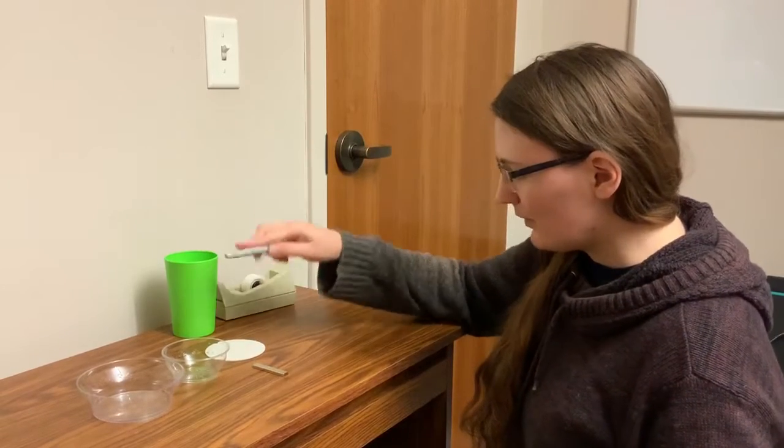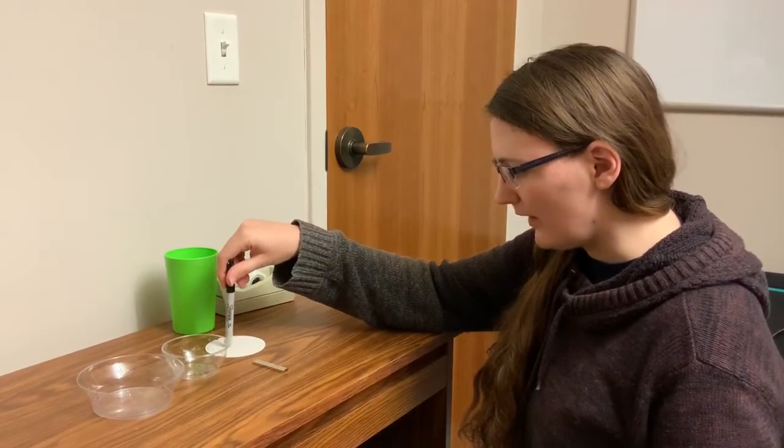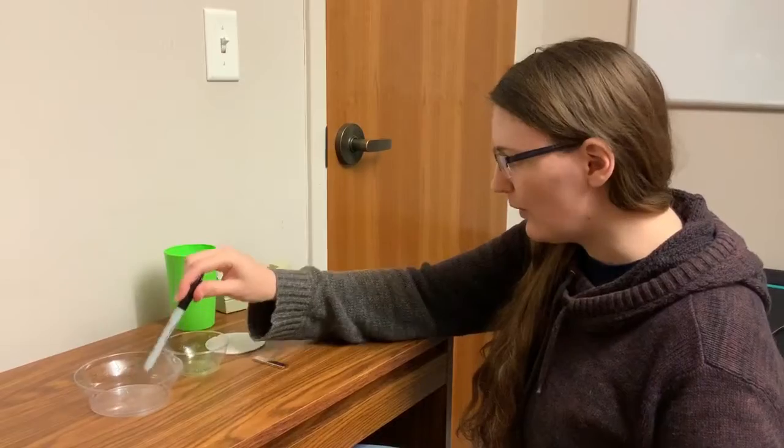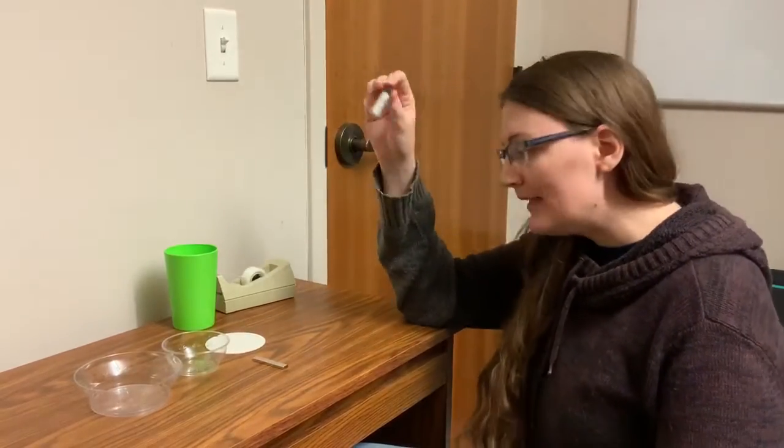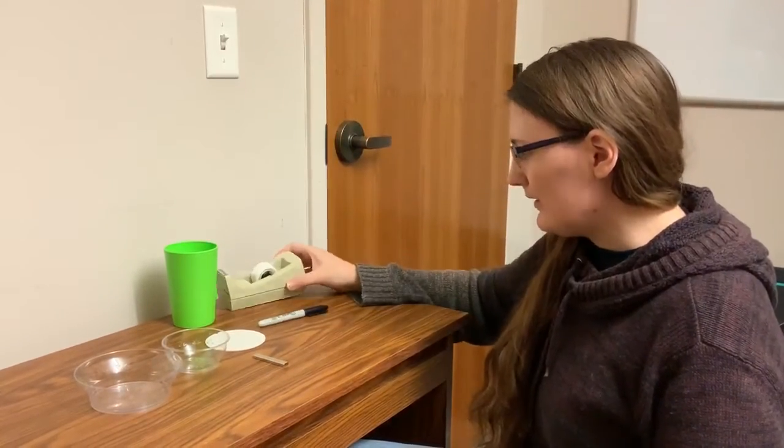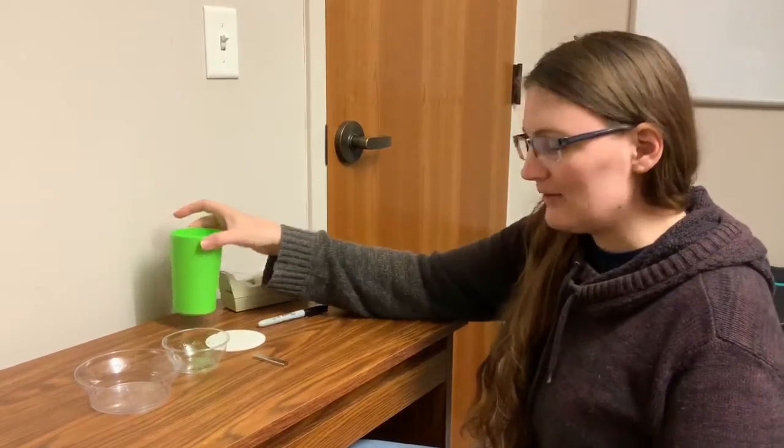And you also are going to need your cardboard circle and your two bowls. You're going to need a sharpie or some kind of marker and tape and water.